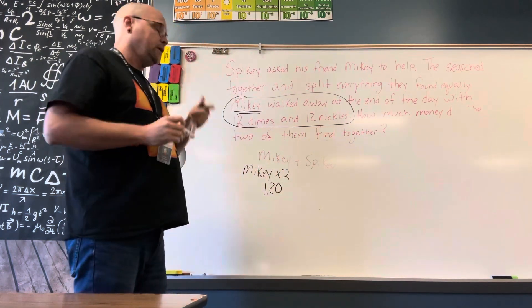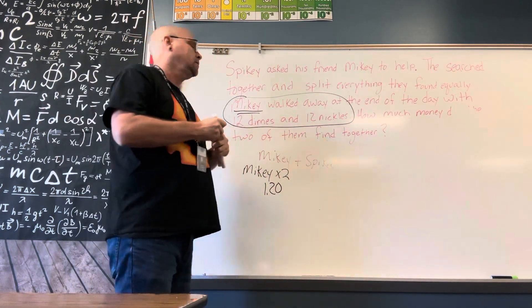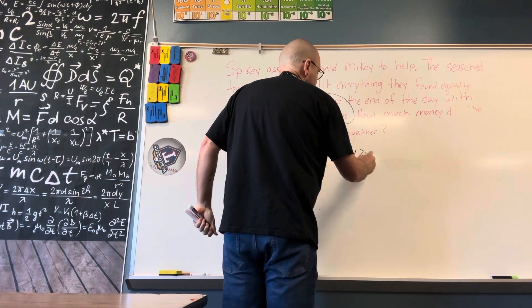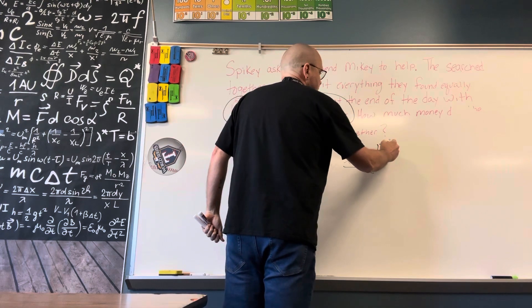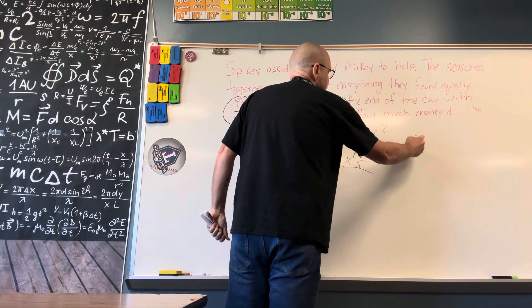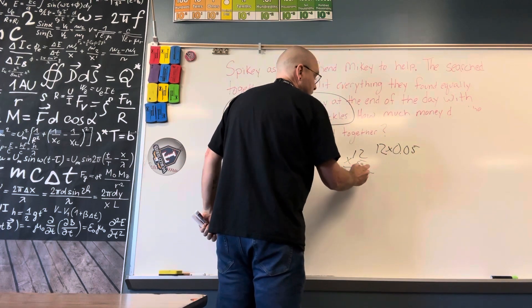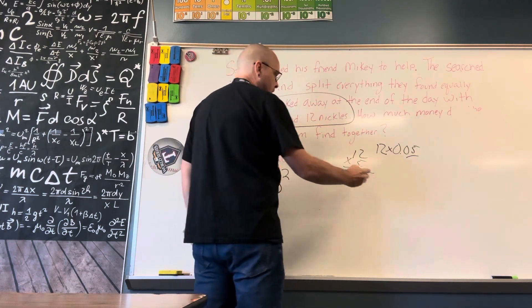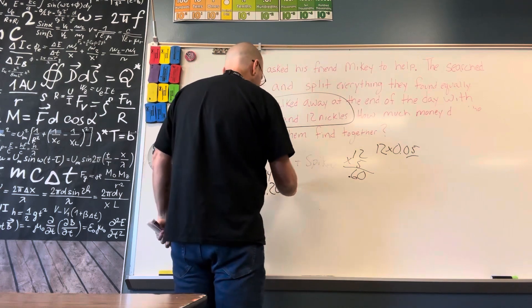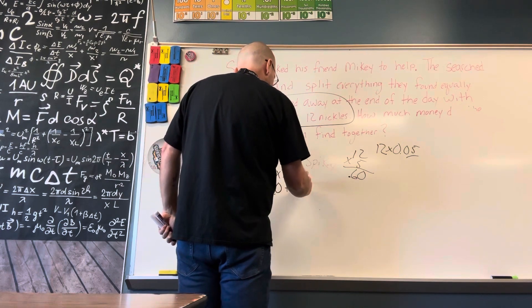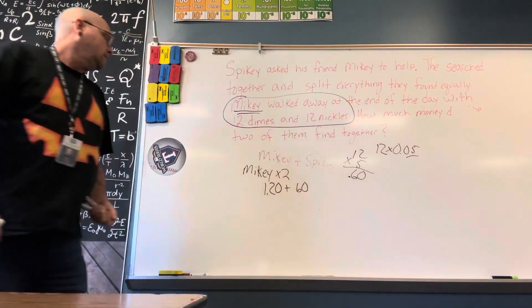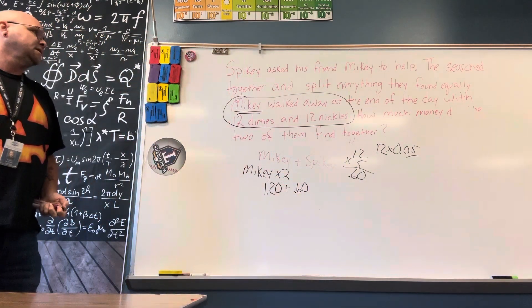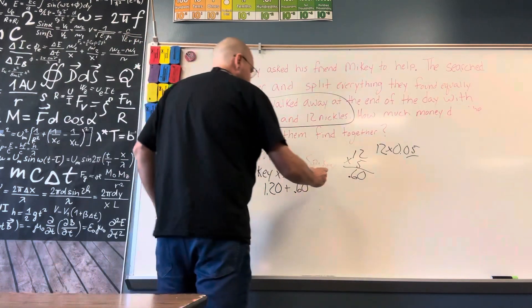And 12 nickels, which is, so that would be 12 times 5. The actual problem would be 12 times 0.05. 12 times 5 is 60. Two numbers behind the decimal point in the problem, two behind it in the answer. So that's 60 cents. So we have a dollar 20 plus 60 cents is one dollar and 80 cents.